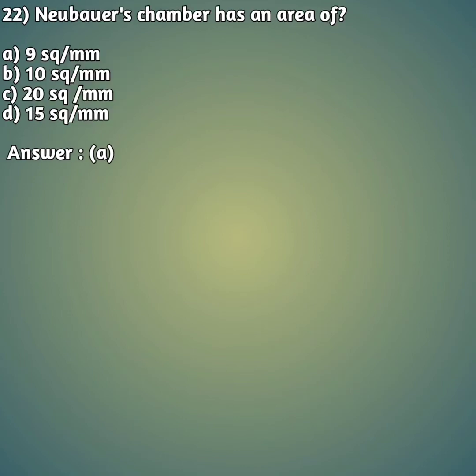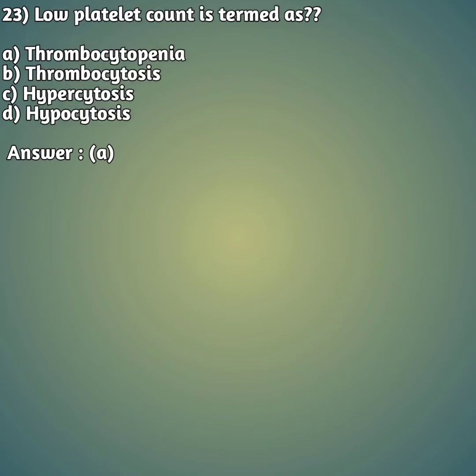Question 22: The Neubauer chamber has an area of — option A: 9 square mm, option B: 10 square mm, option C: 20 square mm, option D: 15 square mm. The right answer is option A, 9 square mm.